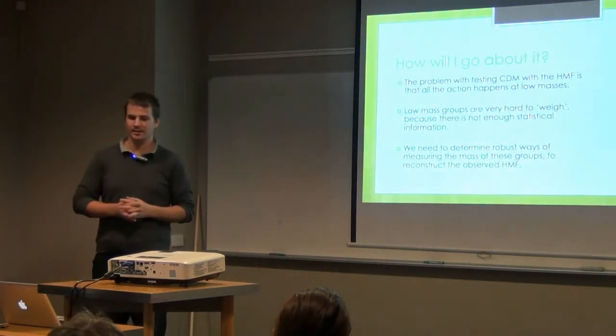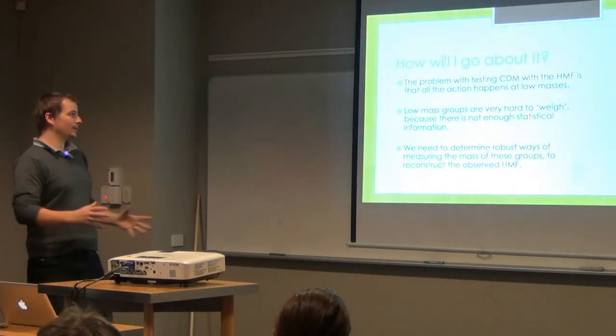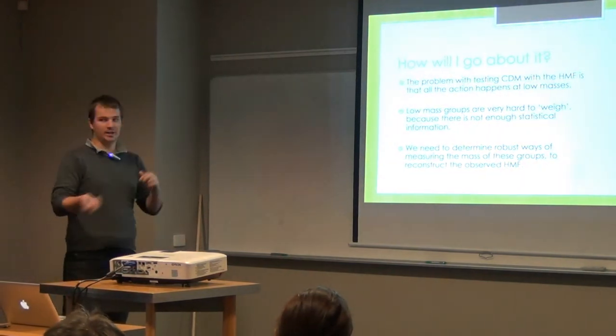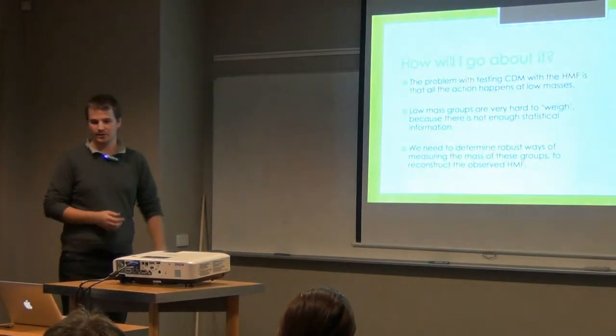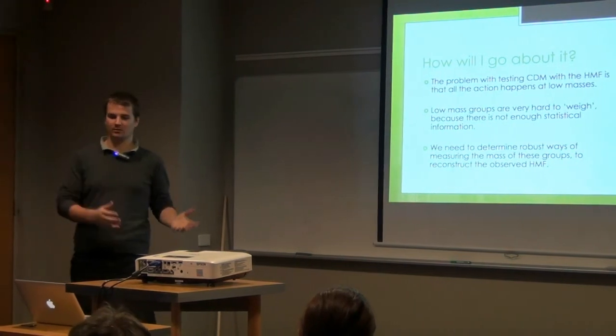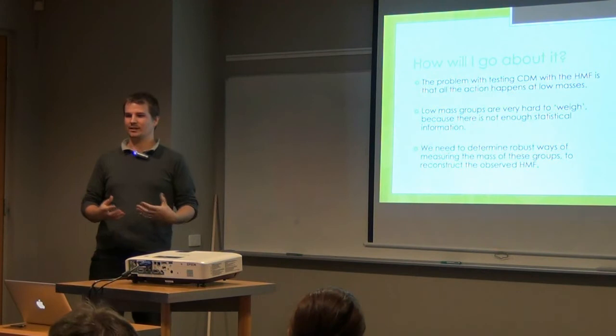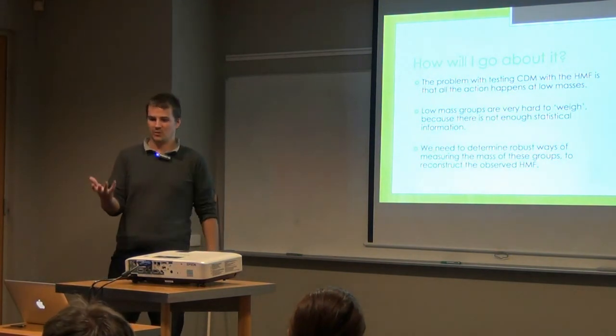How am I going to go about testing this? The problem with testing cold dark matter with the halo mass function is that all the action happens at the low masses. Low mass groups in observational surveys are more difficult to weigh. There's just not enough statistical information there to get good results.